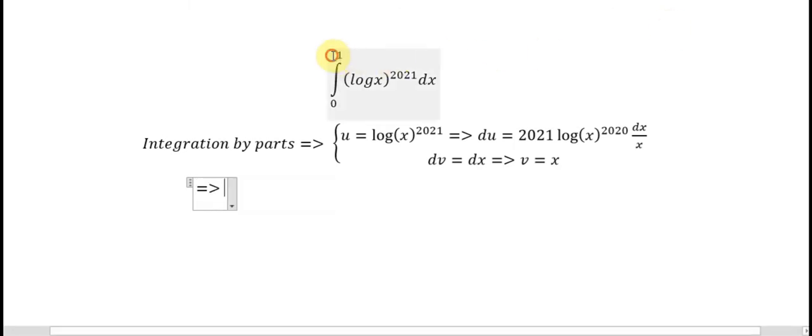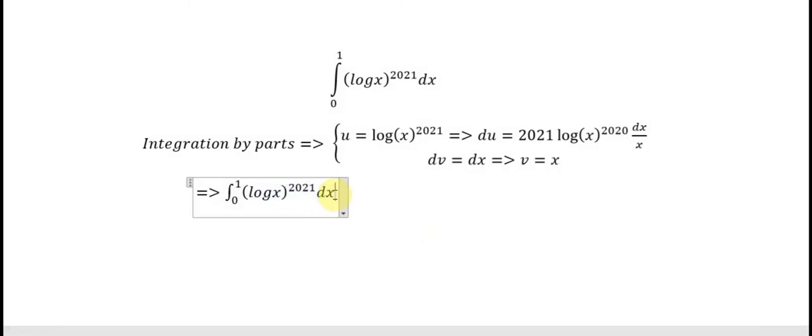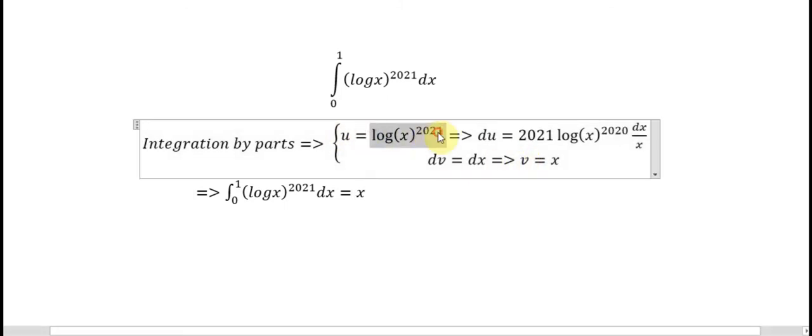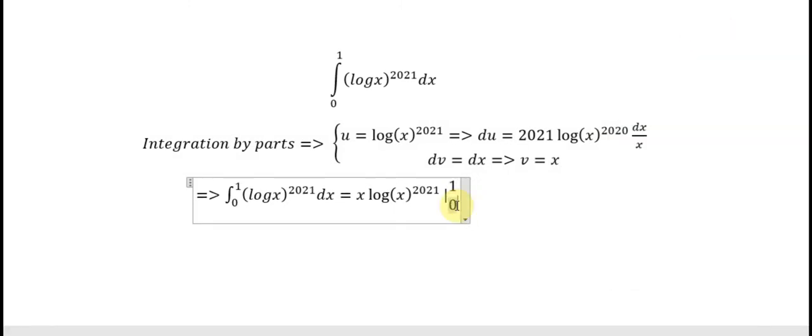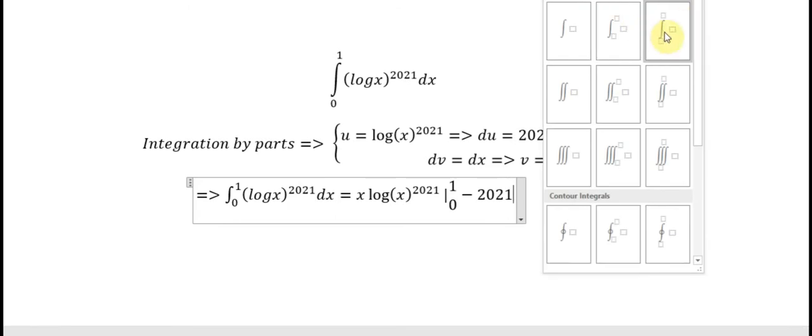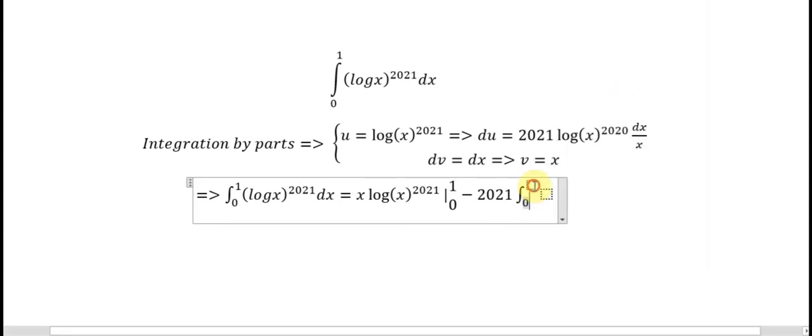And now we have the result. u multiplied with v is x multiplied with logarithm base e of x power 2021, evaluated from 0 to 1, minus 2021 times the integral from 0 to 1 of logarithm base e of x power 2020 dx.